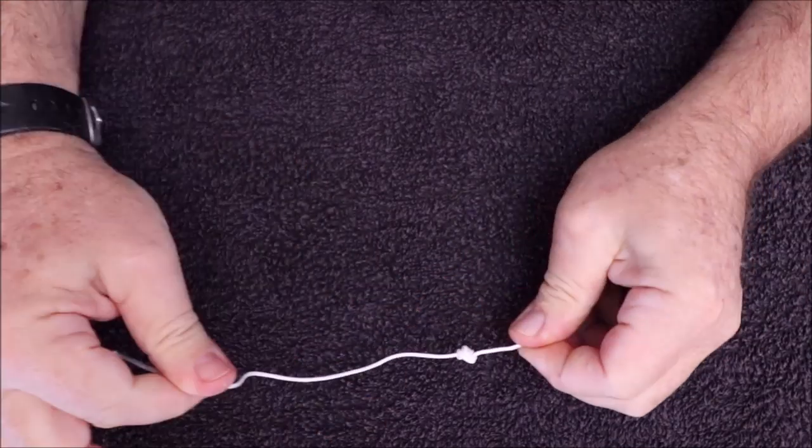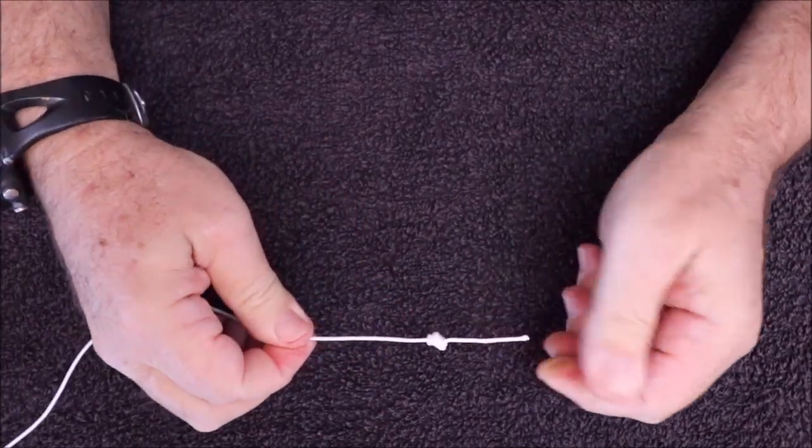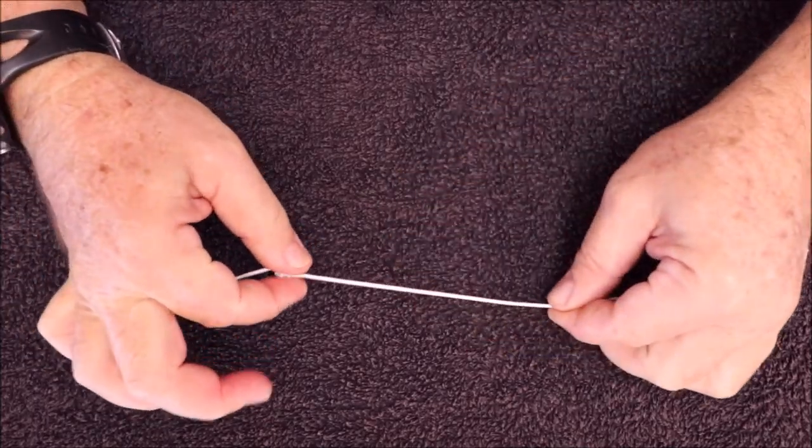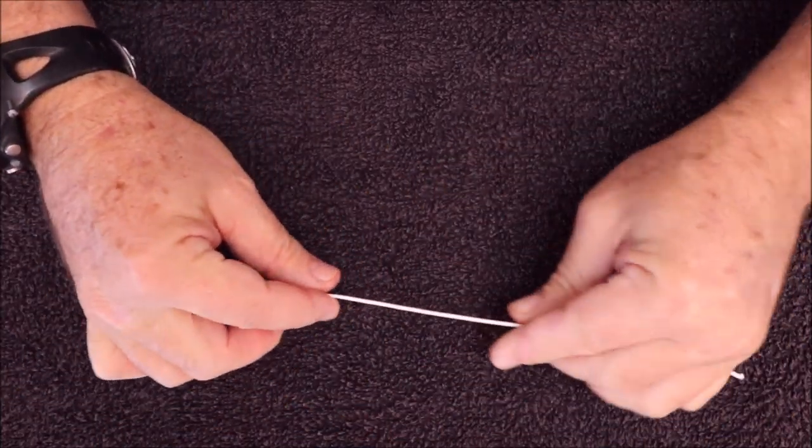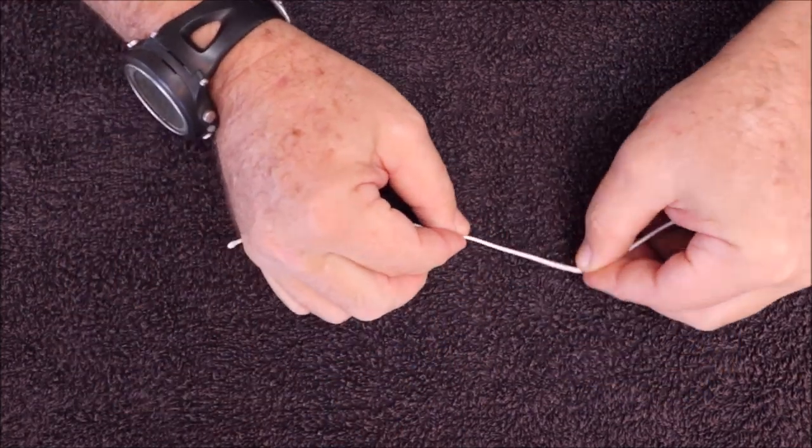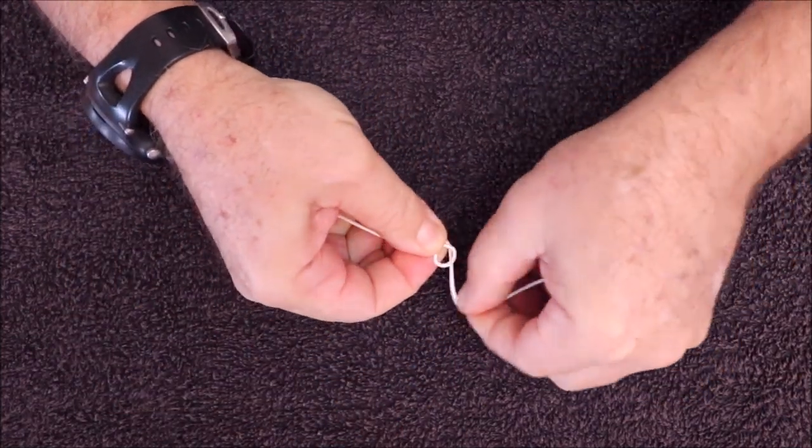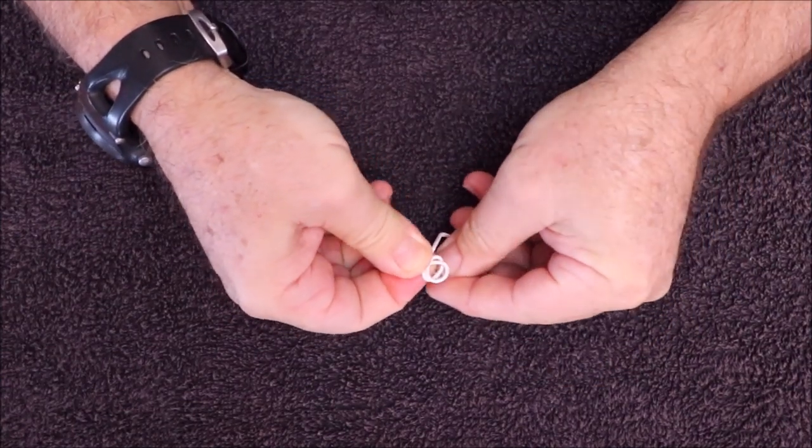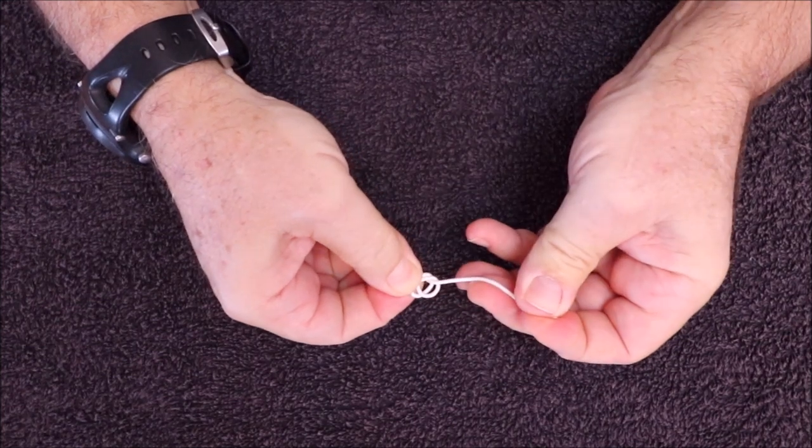I'm going to retie that and show it again. Basically mark more or less where you would need it to be. Throw two loops—one, two—take the tag end, pass it through four times: once, twice, three times, four times.